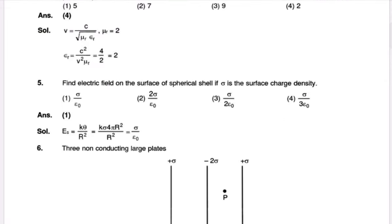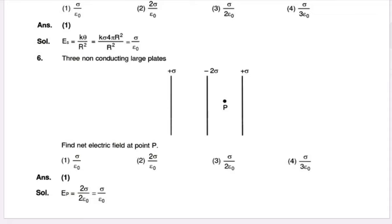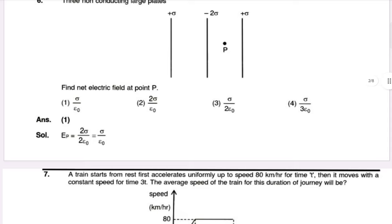The final question is to find the electric field on the surface of a spherical shell where sigma is the surface charge density. The net electric field involves sigma over epsilon. The system gives sigma by epsilon_0 for the electric field on the surface.